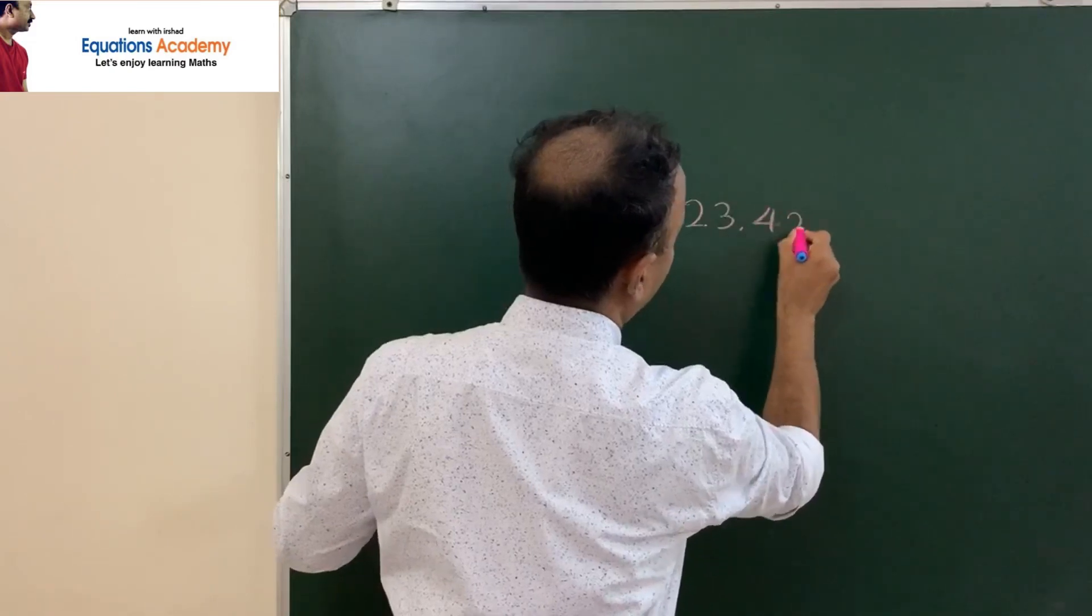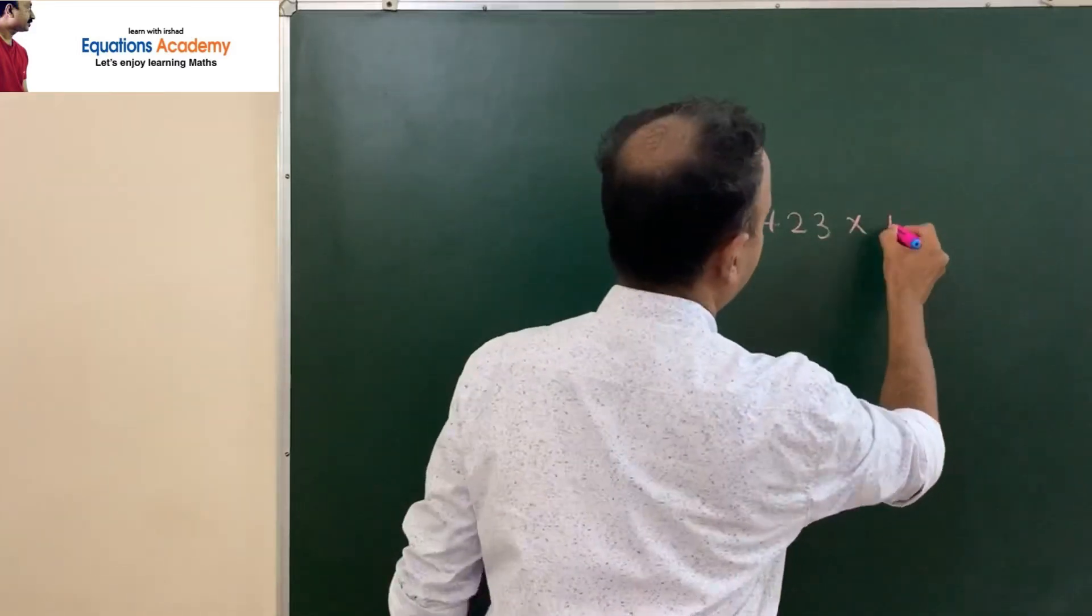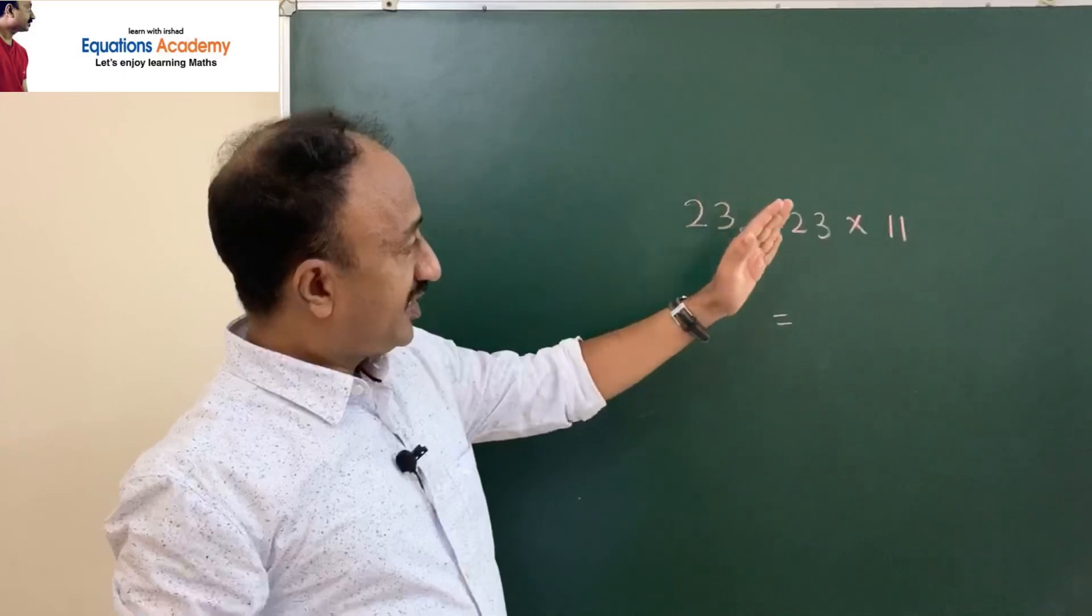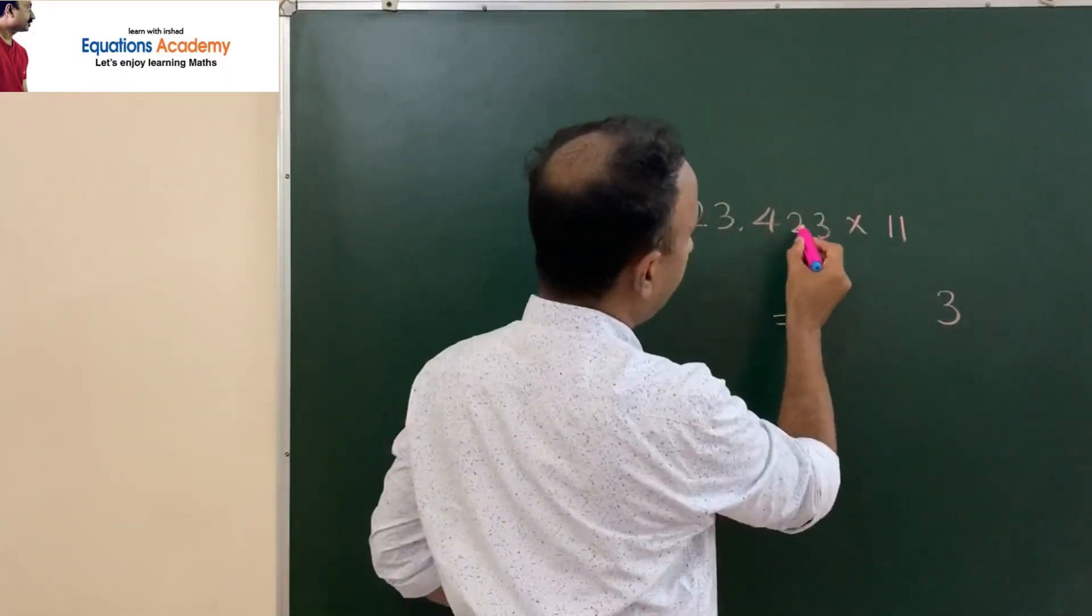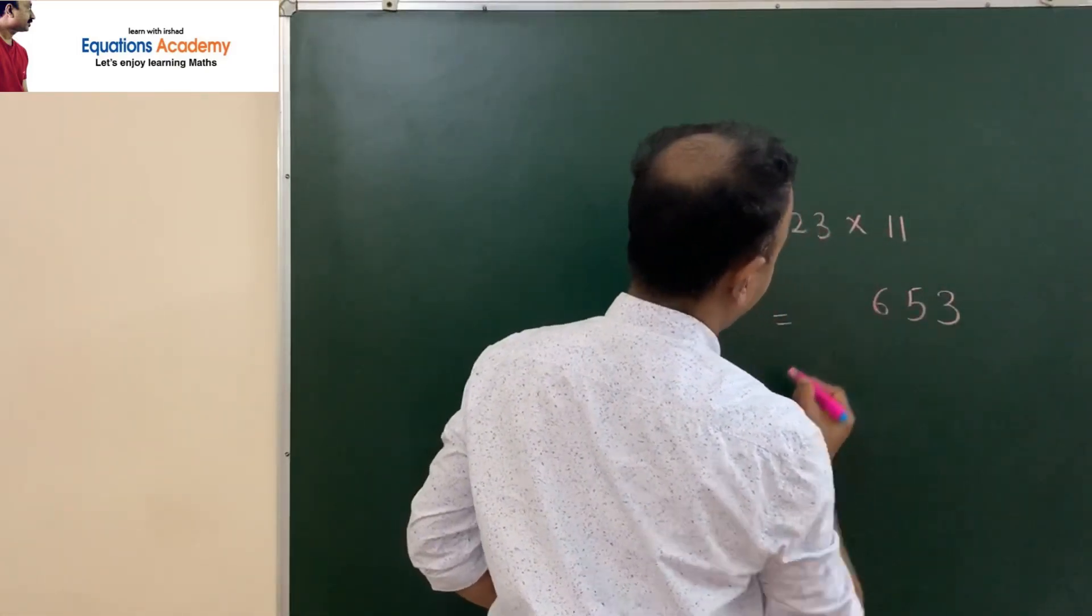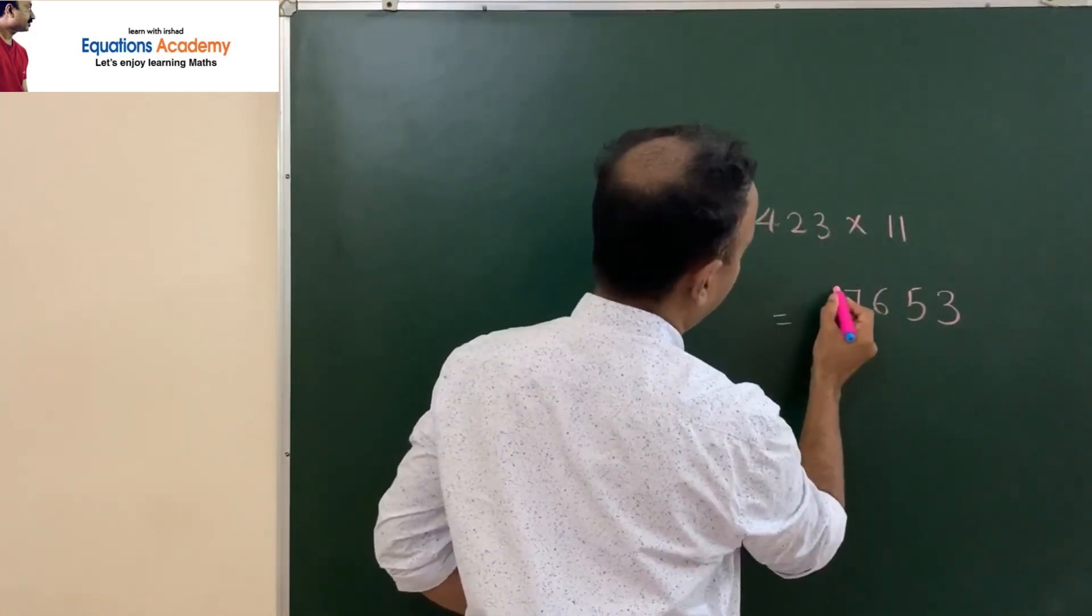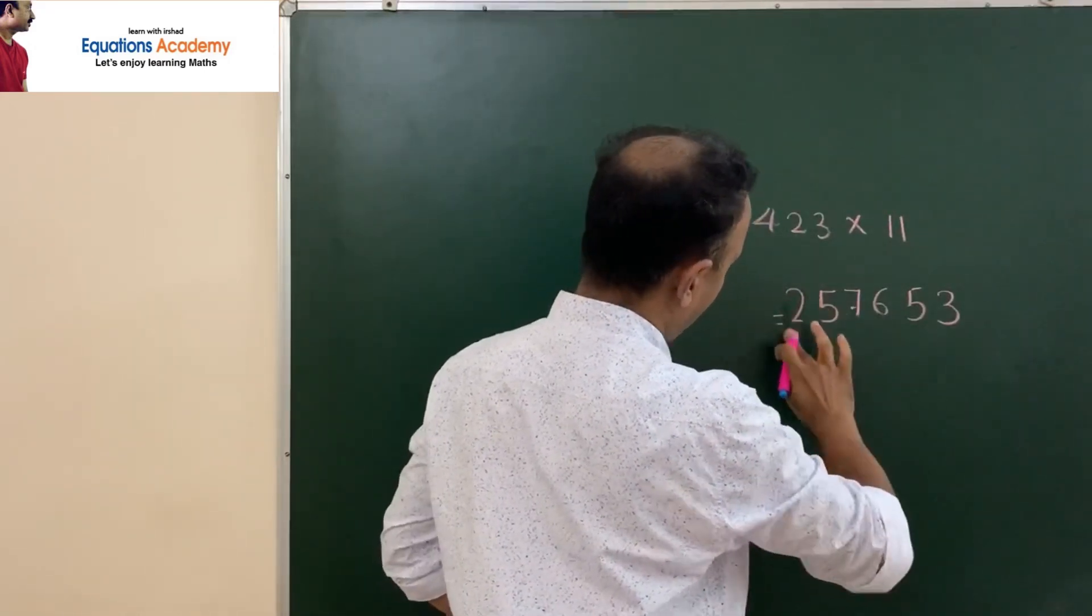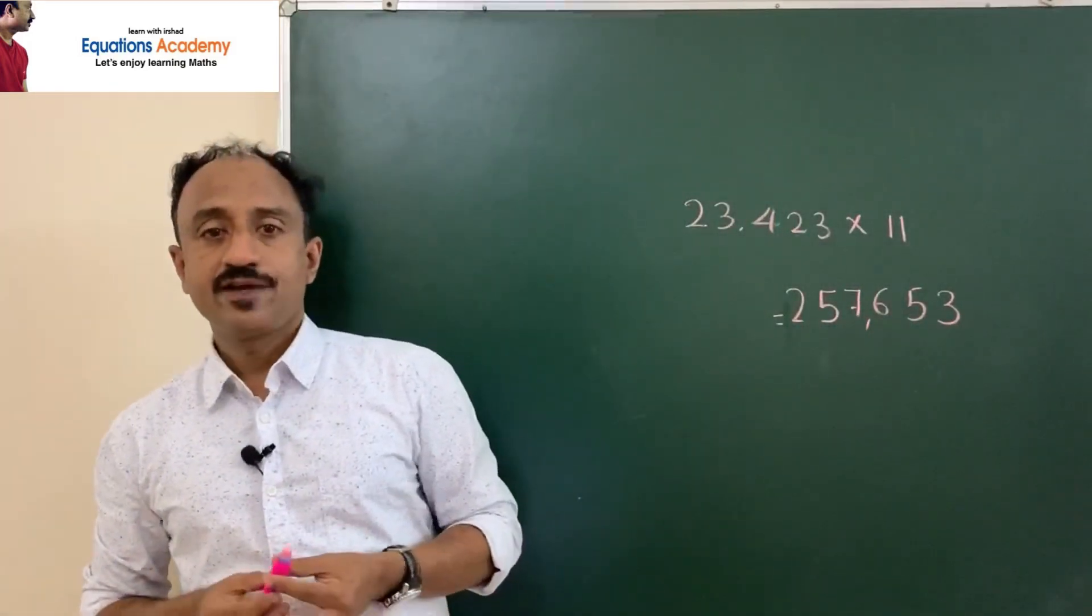23423 times 11. This is a 5-digit number. Same procedure. First, keep this 3 as it is. 3 plus 2 is 5. Then 2 plus 4 is 6. 4 plus 3 is 7. 3 plus 2 is 5. Keep the 2 as it is. So this is 257,653.